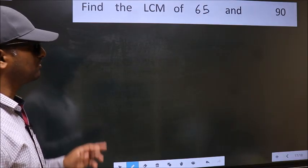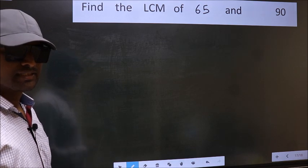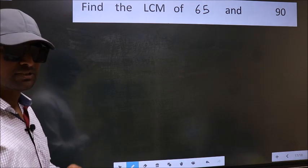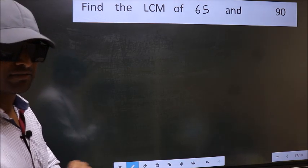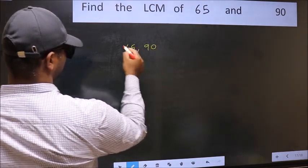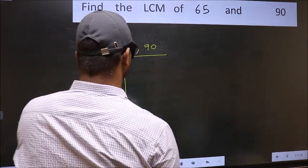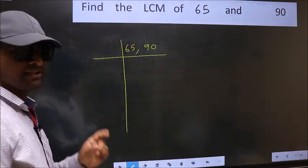Find the LCM of 65 and 90. To find the LCM, we should frame it in this way: 65, 90. This is your step one.